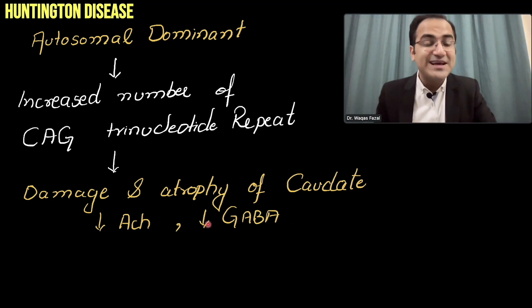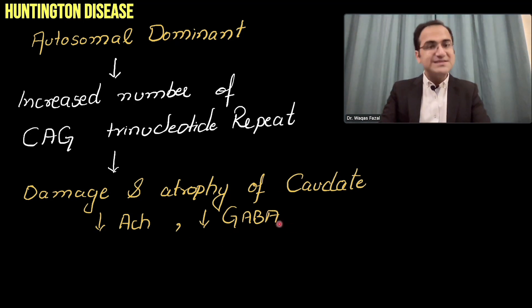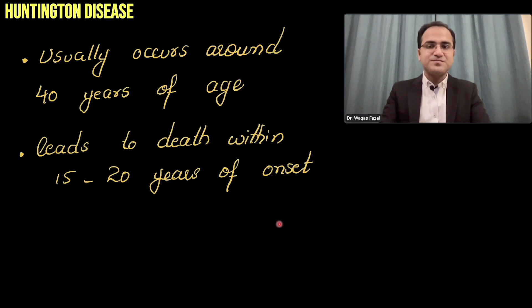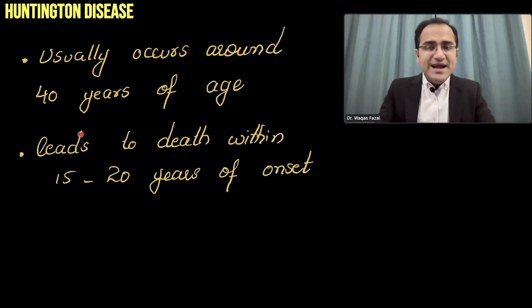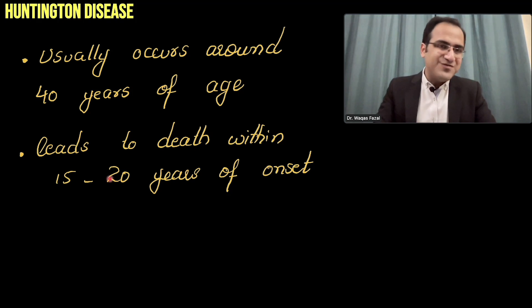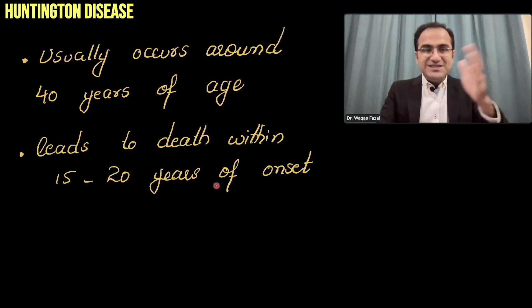Huntington disease usually presents around the age of 40 years and leads to death within 15 to 20 years of onset.